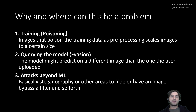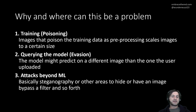A third scenario doesn't have anything to do with machine learning specifically. The idea of hiding one image inside another image has implications in many other areas — you might be able to secretly send messages or bypass certain filters. This is something to be aware of if you do bug bounty hunting as well.